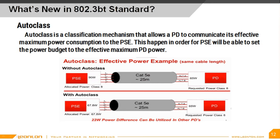In our example, without using auto classification, the PSE allocates power by class. Therefore, there is 25 watts wasted since the PD only requires 65 watts to operate.